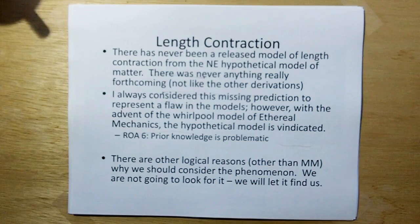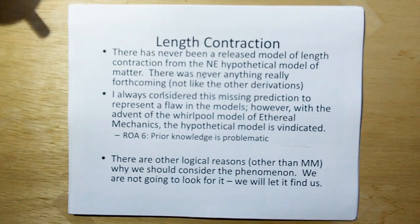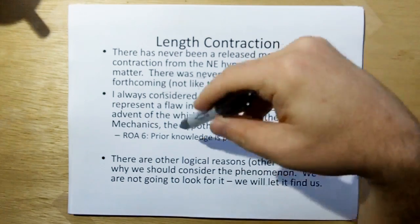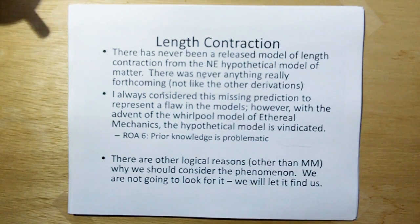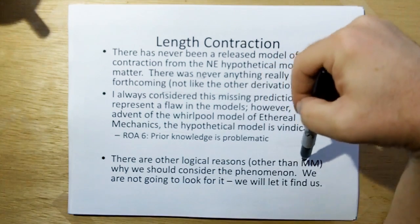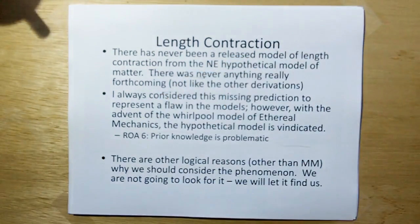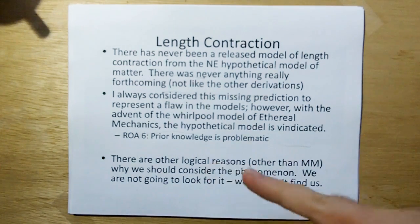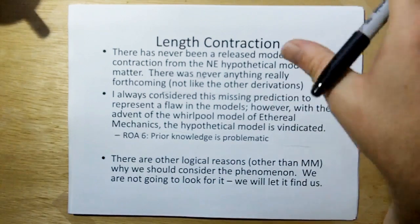In new electromagnetism, I've never had a released model of length contraction, because there was never really any derivation that was simple and forthcoming. All the other things were simple and forthcoming. I could never find anything that suggested there was length contraction in the electromagnetic model. In the past, I've always considered this missing prediction to represent a flaw in the models. However, with the advent of the Whirlpool model of ethereal mechanics, the hypothetical model is vindicated. And that's where we get into prior knowledge can lead you down wrong paths. There are other logical reasons, other than Michelson-Morley, why we should consider the phenomenon of length contraction. But we're not going to look for it. We're just going to keep doing what we're doing, and if the models tell us there's length contraction, then we'll believe it. Right now, we don't have a prediction or outcome that we really need it for in anything we're doing.